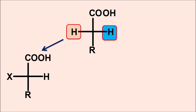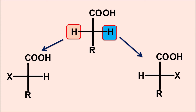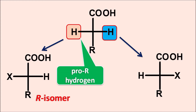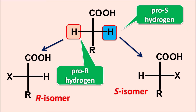Suppose this hydrogen is going to be replaced, then it can produce a structure like this. And if this hydrogen is going to be replaced, it can produce another structure. Let us assume the first structure results in the formation of the R isomer — then this hydrogen is called the pro-R hydrogen. The pro-R hydrogen is the hydrogen which on replacement with a different group results in the R isomer. Similarly, the second product will be the S isomer, so that hydrogen is called the pro-S hydrogen. In this way, enantiotopic hydrogens may result in either the R isomer or S isomer.